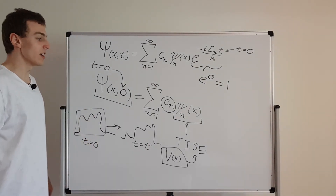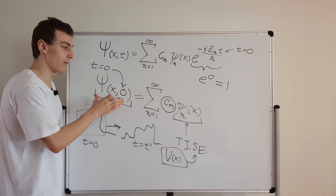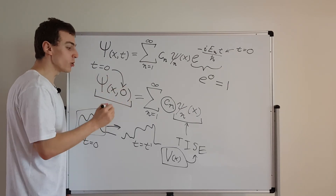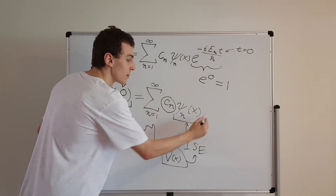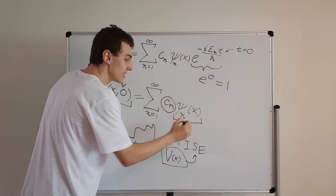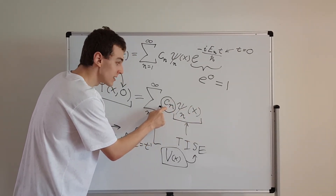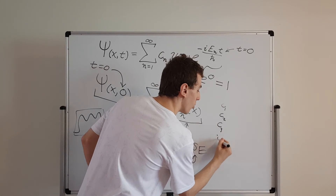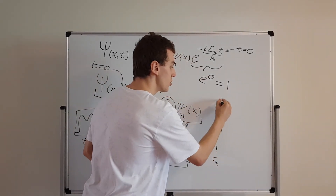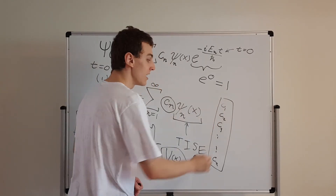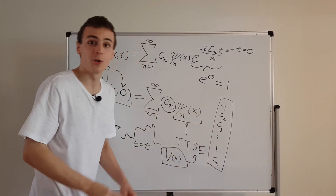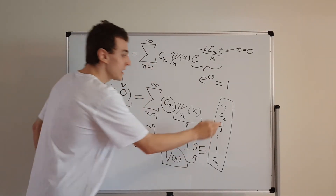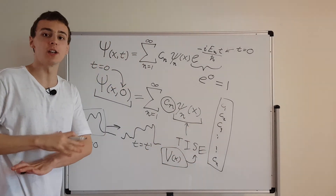So the key message is: if you want to find the time evolution, all you need is the initial state written in terms of the ψn's. Find the constants c1, c2, c3, all the way up to cn — potentially infinitely many of them. If you can find all those constants, you know everything there is to know about the wave function. That is the beauty of this form of the solution: the constants alone give you the time evolution for any time.